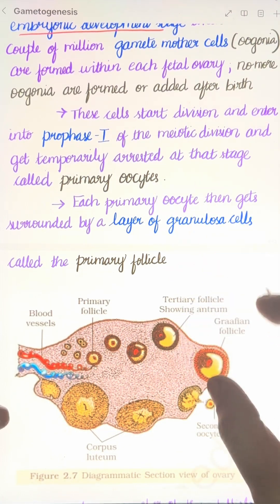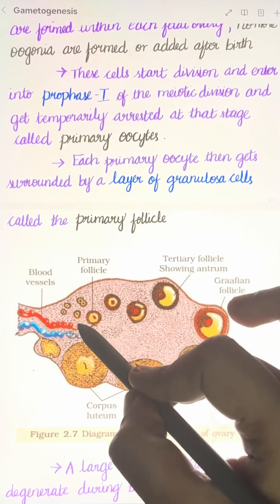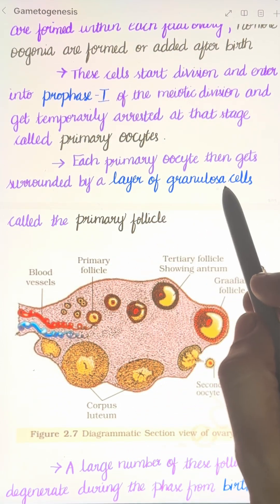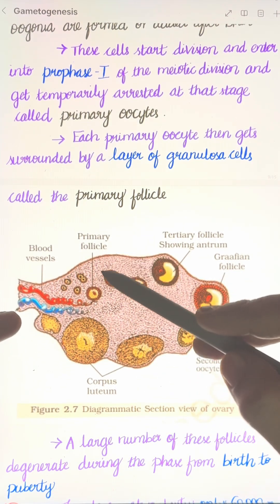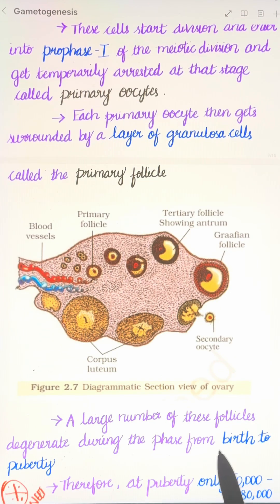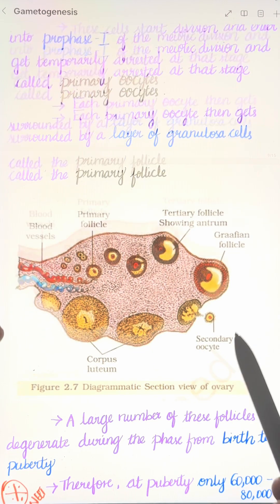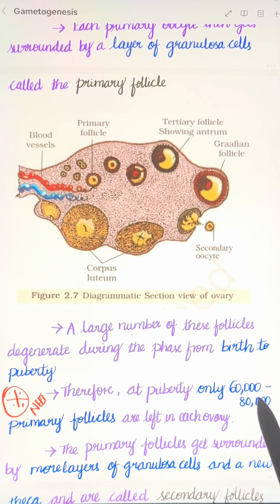The primary oocytes are surrounded by a layer of granulosa cells, forming the primary follicle. A large number of these primary follicles degenerate from birth to puberty, and only 60,000 to 80,000 primary follicles are left in each ovary at puberty.